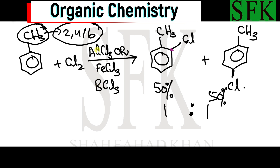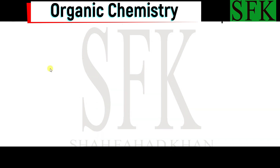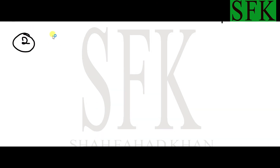These catalysts are important and frequently asked in past papers. When methylbenzene is reacted with chlorine in the presence of any of these catalysts, we get two products: 2-chloromethylbenzene and 4-chloromethylbenzene. Now let's move on to the second reaction — nitration. The first reaction was halogenation.